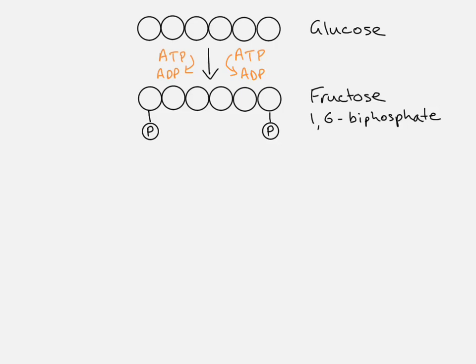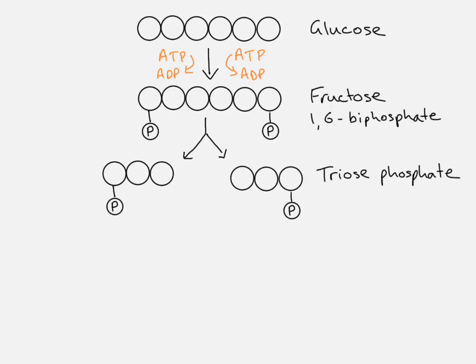So in order for glycolysis to take place, we have to have an input of two ATP molecules at the beginning. So we've got our fructose 1,6-biphosphate, which is now much more reactive, and we now have to split that up. So we split it up into two three-carbon molecules, and they are called triosephosphate. So they still have their phosphate group attached to them. So we have two triosephosphate molecules.